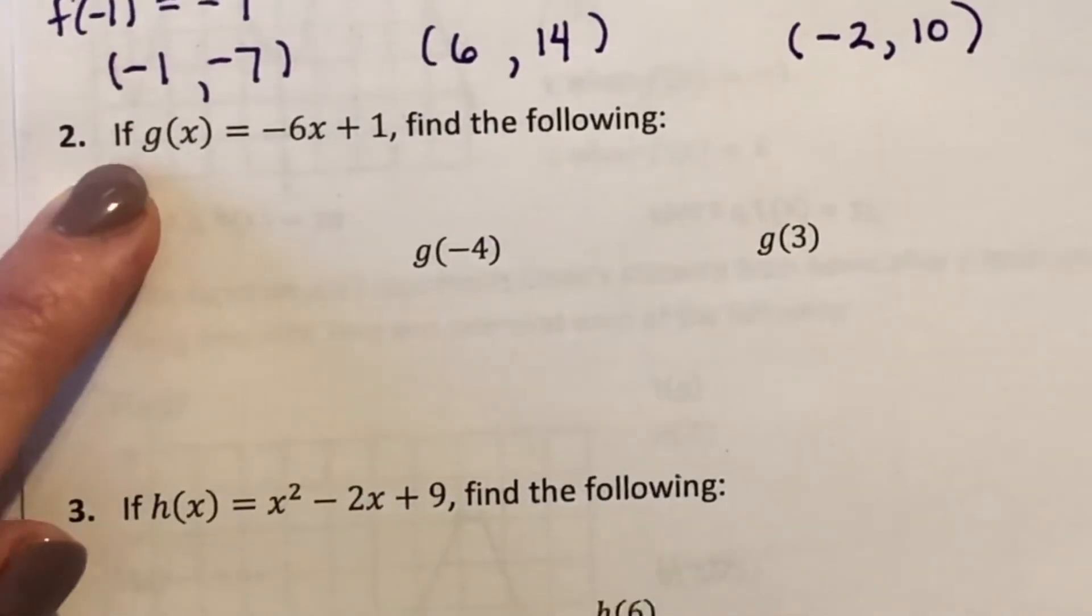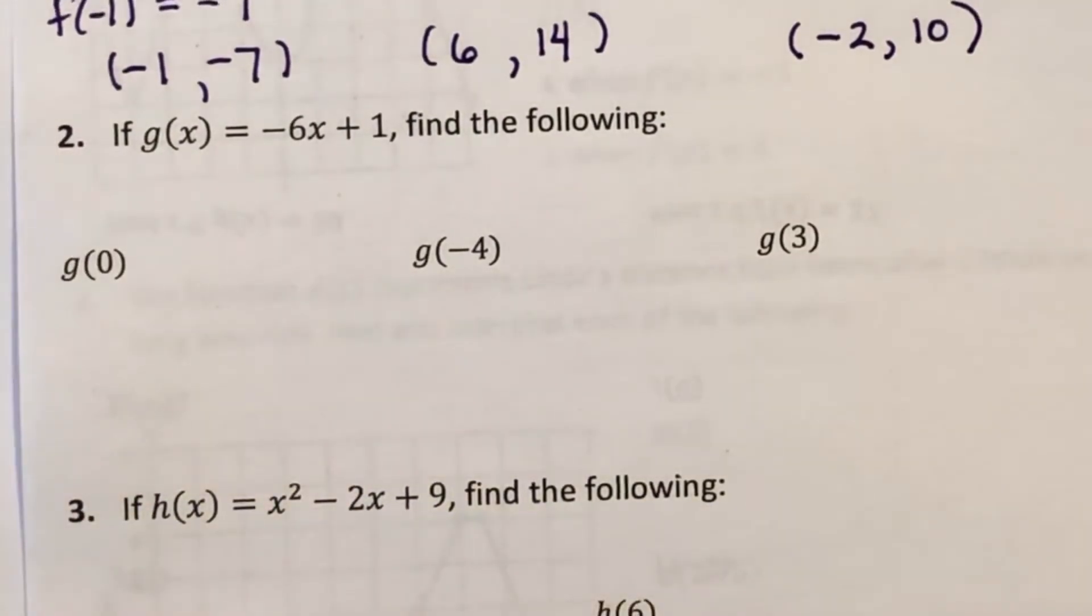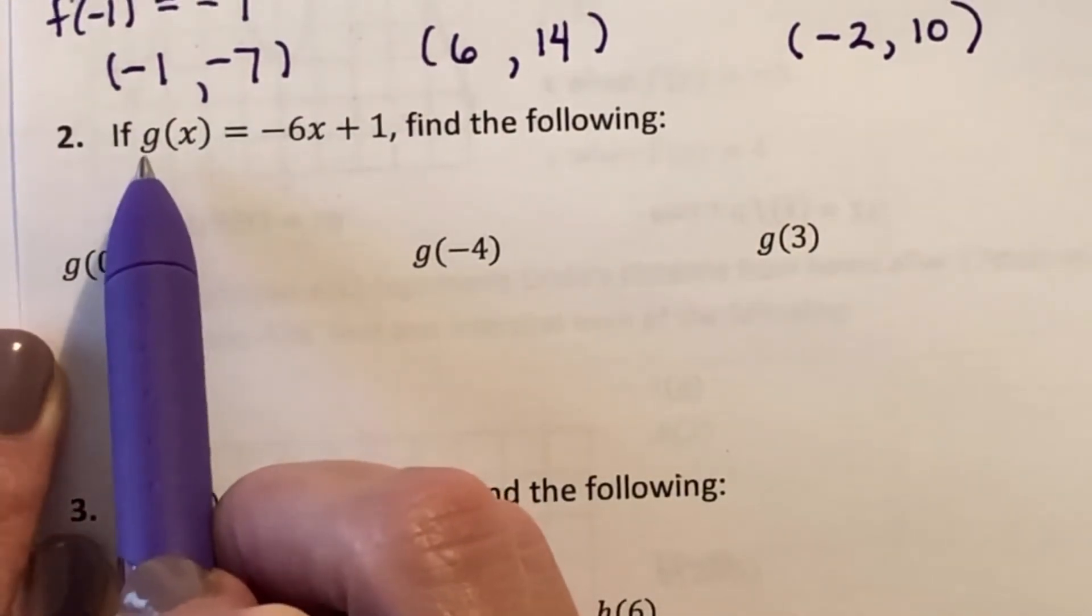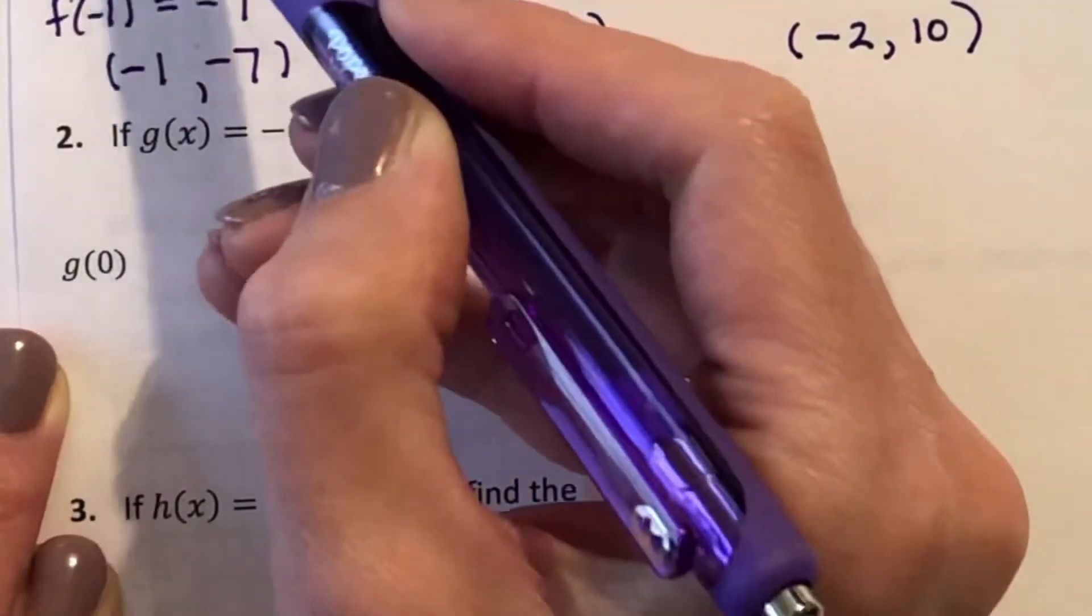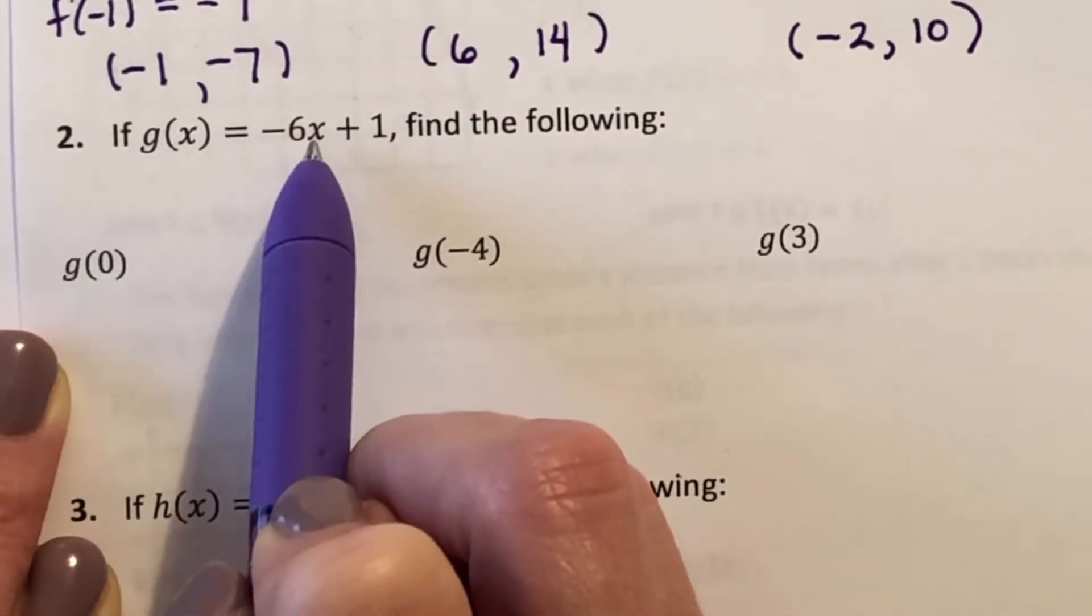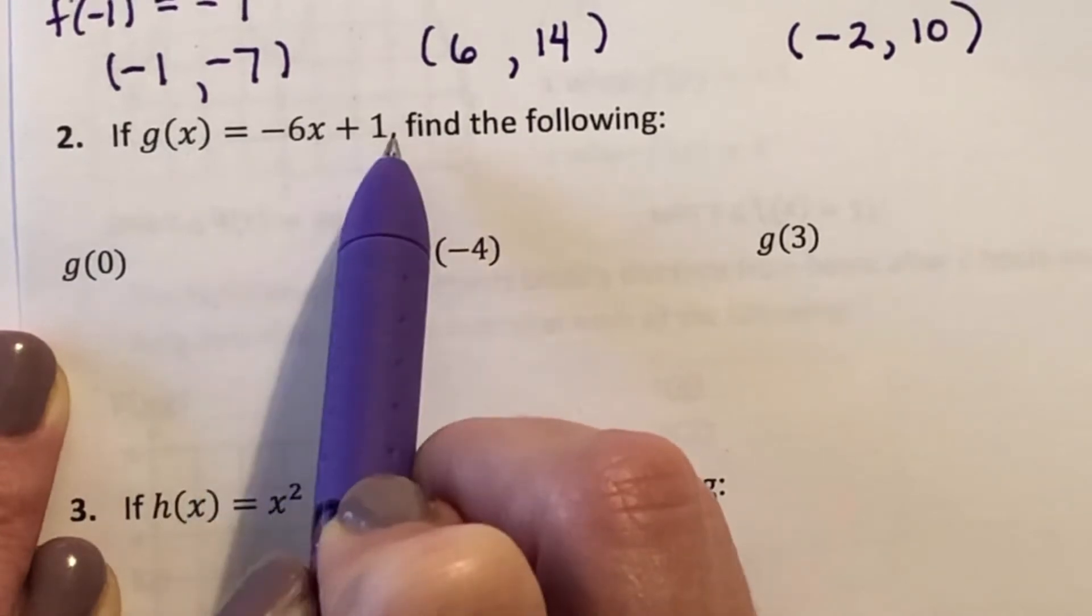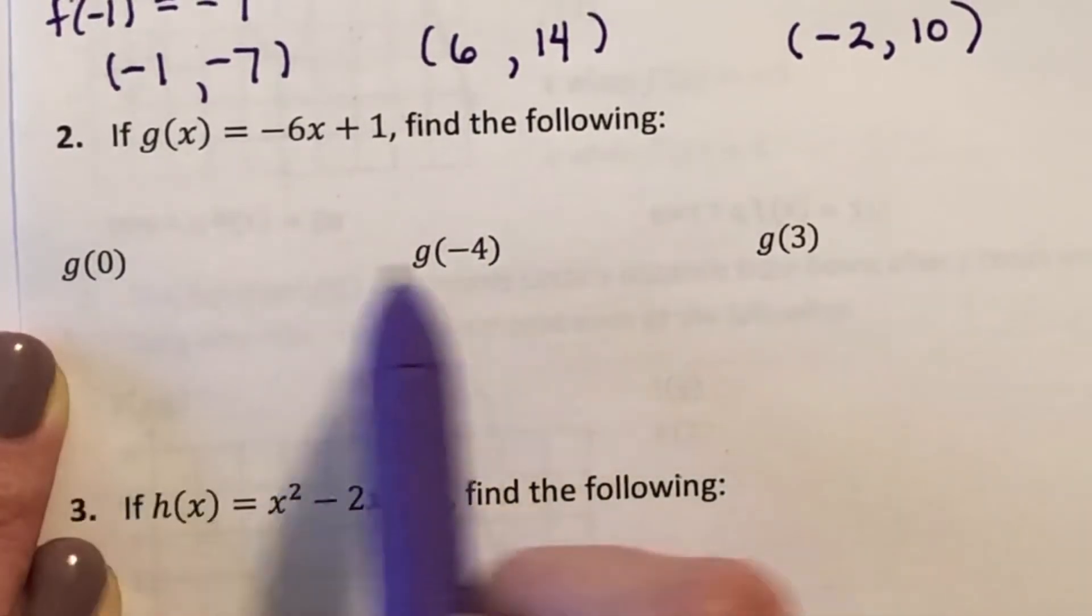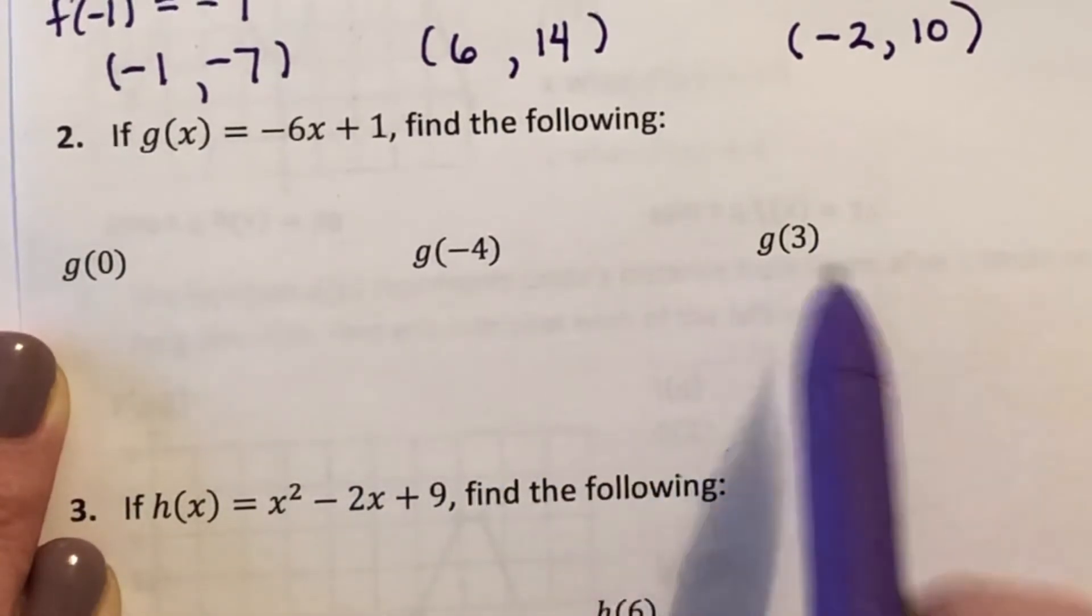Let's do another example. Now we have a different rule. I'm going to label this function g(x), just to make sure it's different than f. But it's still a rule. I'm still plugging a number in. I'm going to multiply it by negative 6, and then add 1. Go ahead and see if you can find the following for g of 0, g of negative 4, and g of 3.